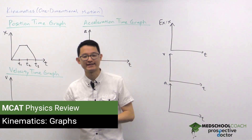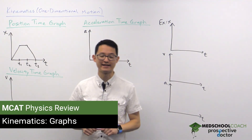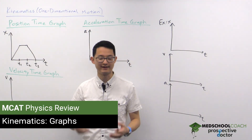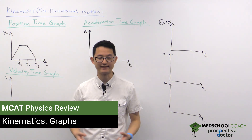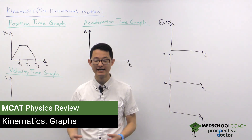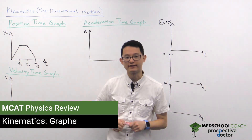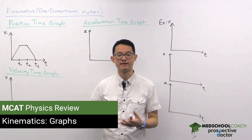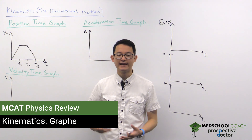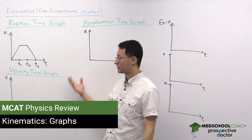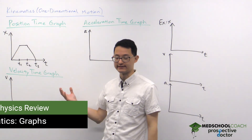Now that we've discussed a few kinematics terms — position, velocity, acceleration, and so forth — let's take a look at a few graphs that are used to represent motions and see how these different terms are represented.